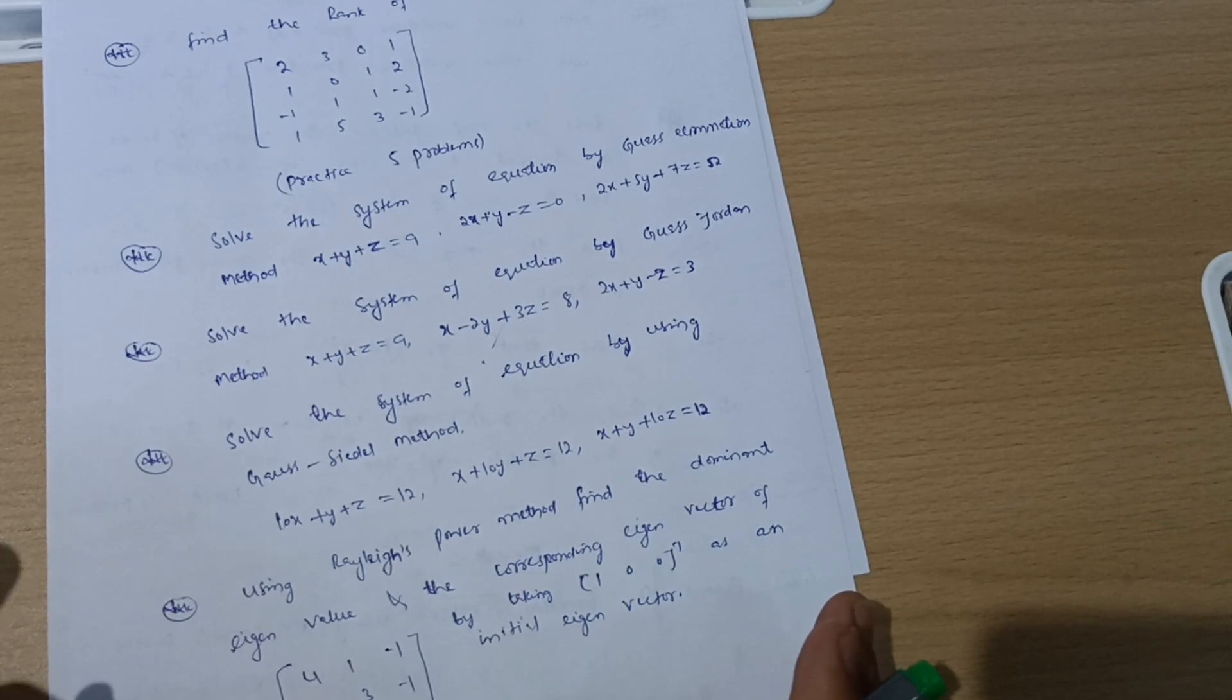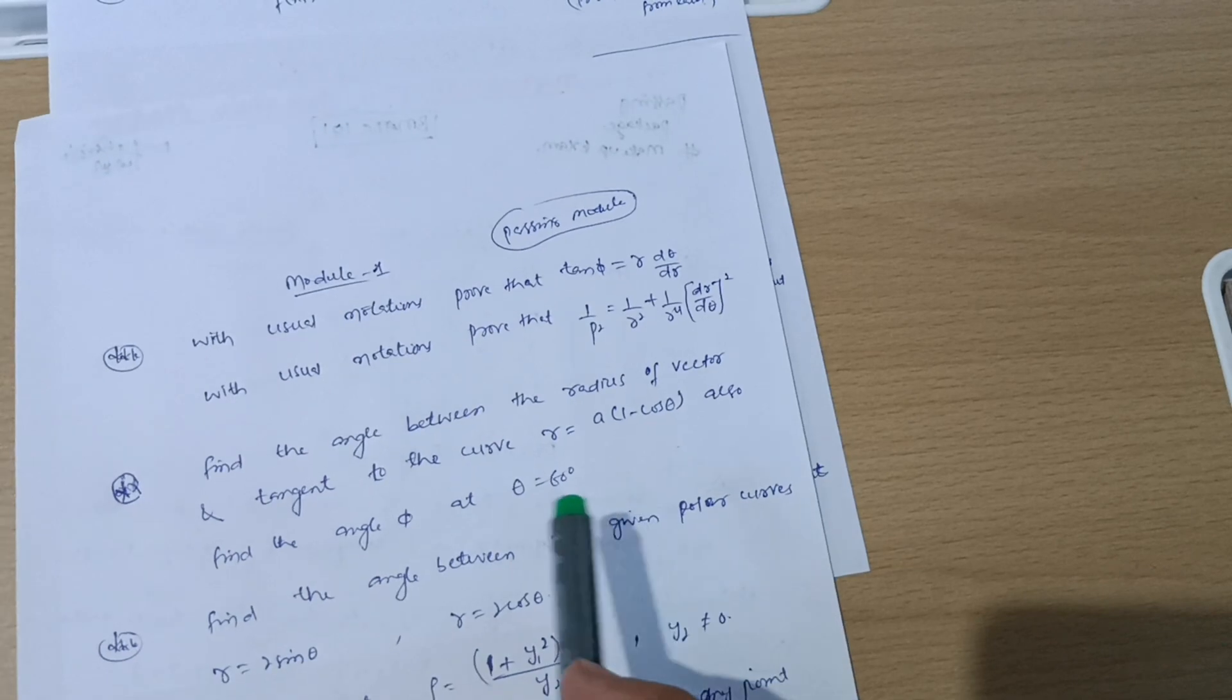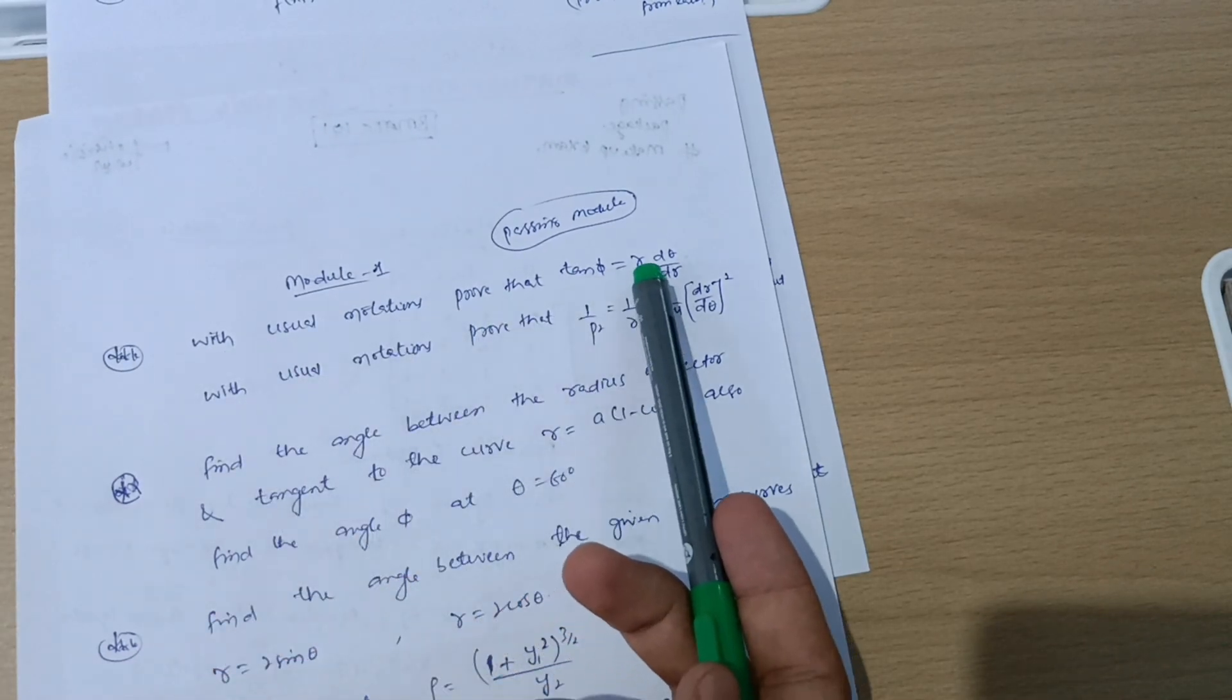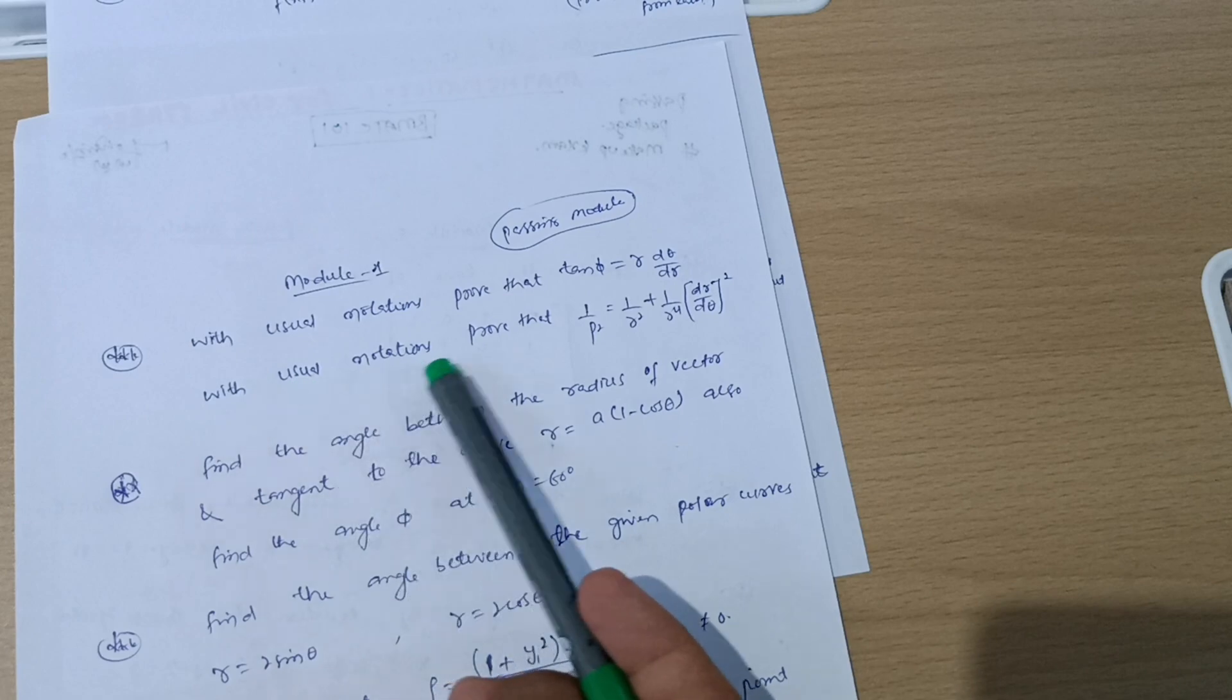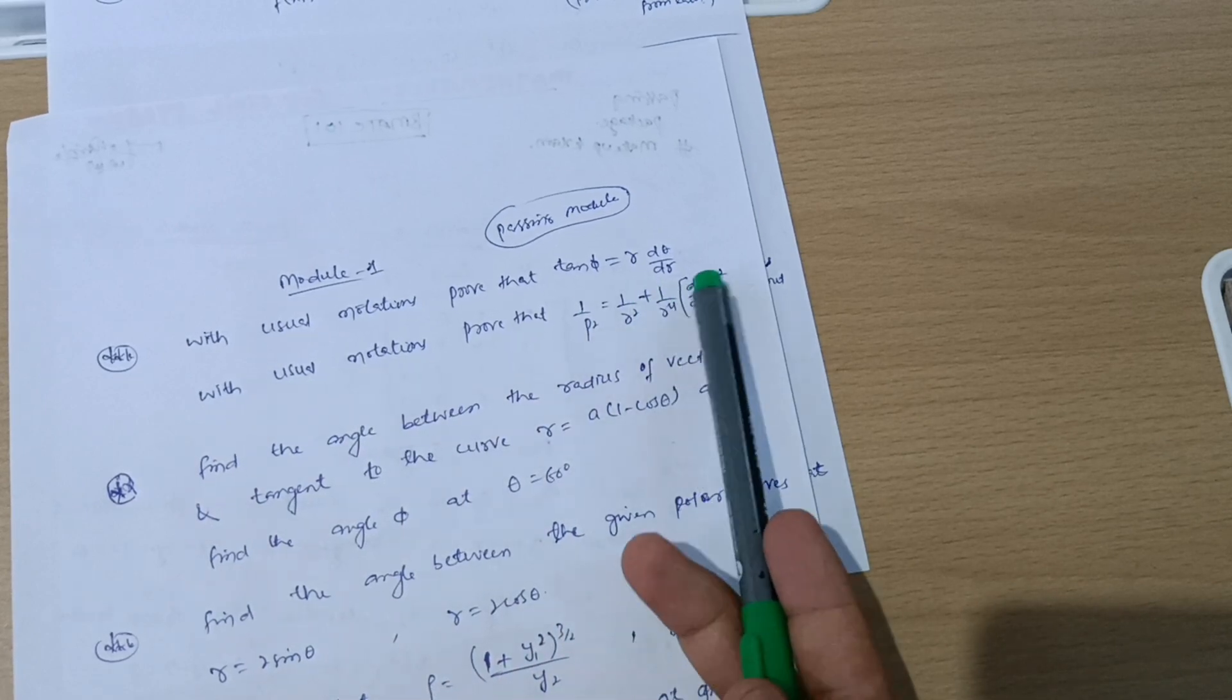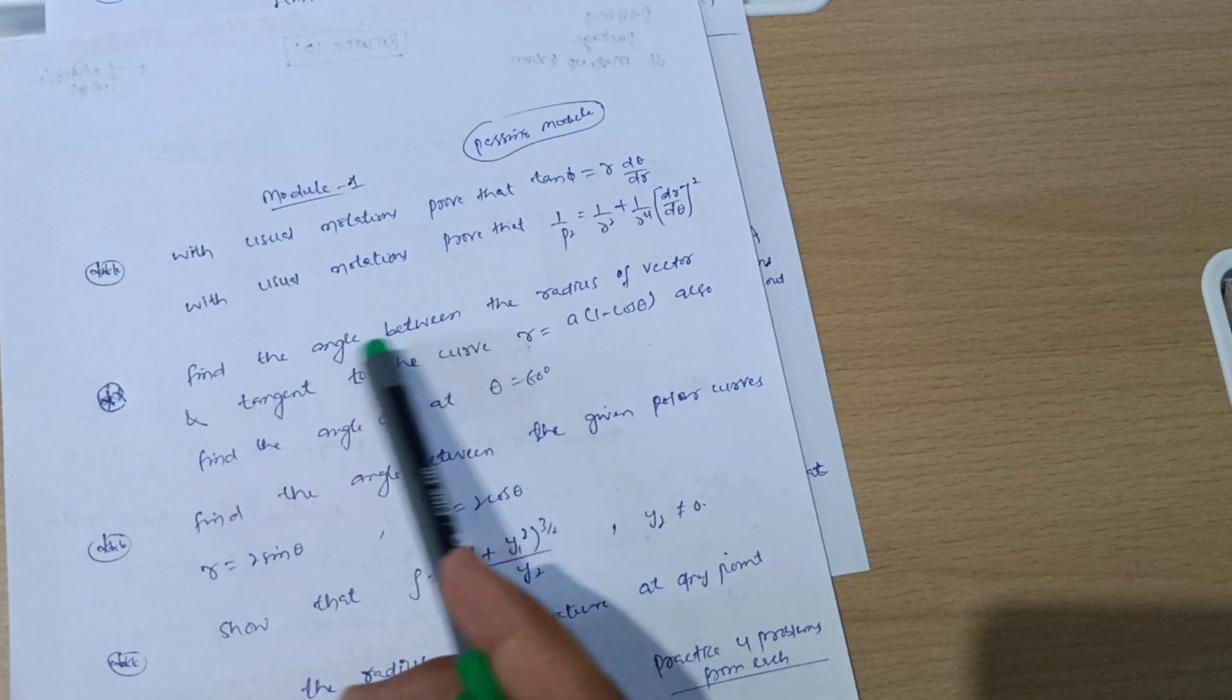Next is Module 1, which is again a passing module where you have to cover some derivations like: with usual notation prove that tan φ is equal to r dθ/dr. With usual notations prove that 1/p² = 1/r² + 1/r⁴(dr/dθ)². Go through the questions like angle between the radius vector and the tangent to the curve r = a(1 - cos θ).